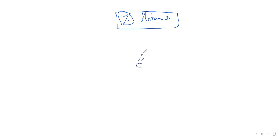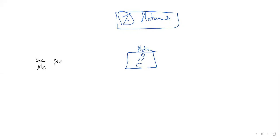For ketones, the structure is C double bond O — that is a ketone. For the reactions of ketones: ketones are produced from secondary alcohols (R-CHOH) by oxidation using potassium dichromate to produce the ketone.